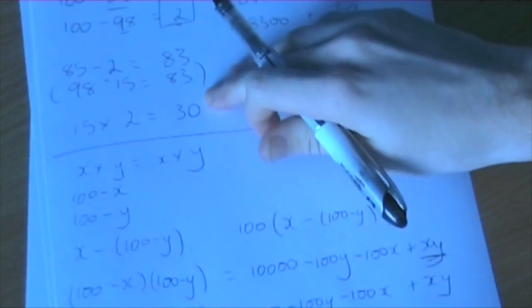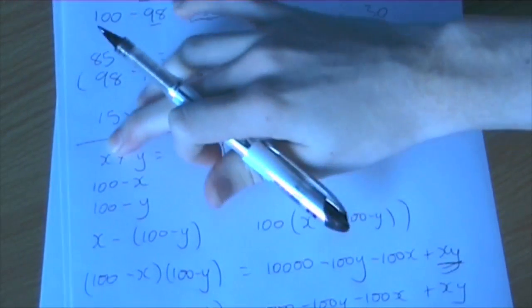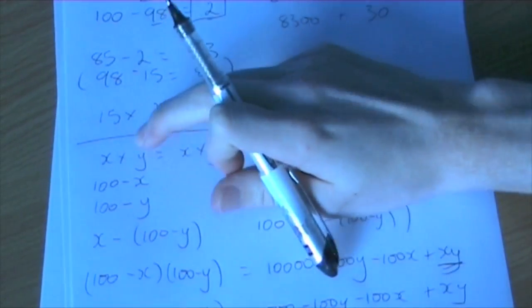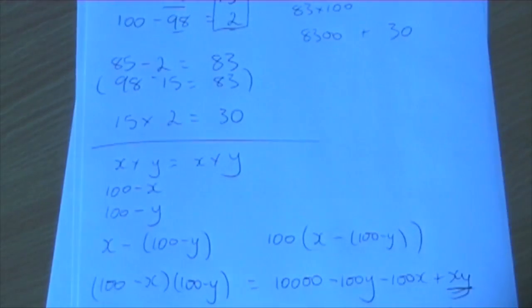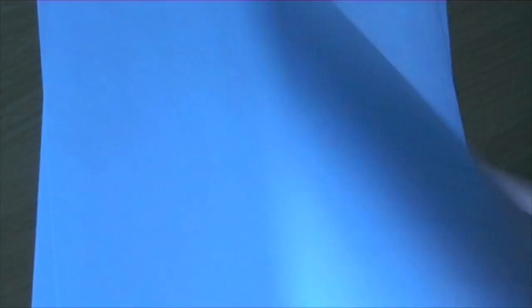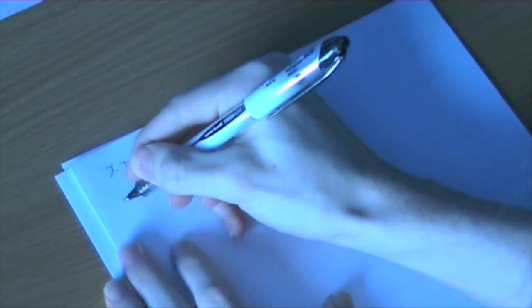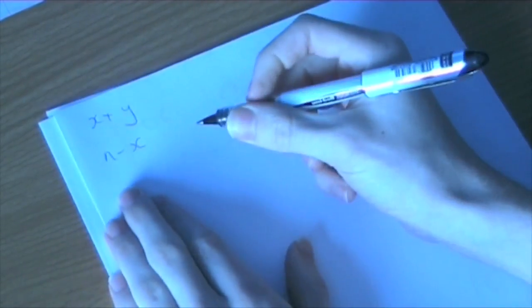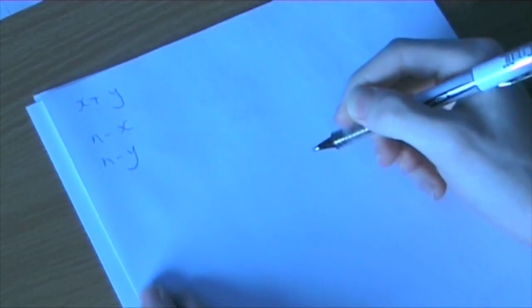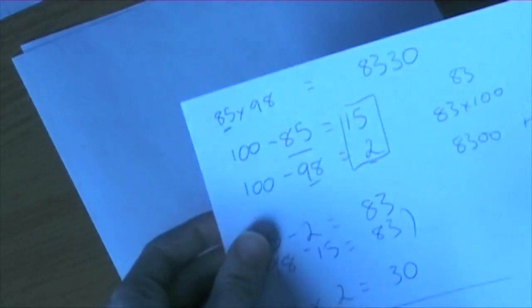We can take this one step further. So you've noticed we've replaced the 85 in my example with x, the 98 with y, but we're still left with 100. Is the 100 really relevant in this sum? Well, it's actually not. So if we say we've got x times y we want to work out. If we replace 100 with n, well, first we did 100 minus 85. So this time it's going to be n minus x, and then 100 minus 98 would become n minus y.